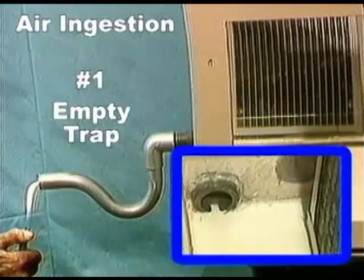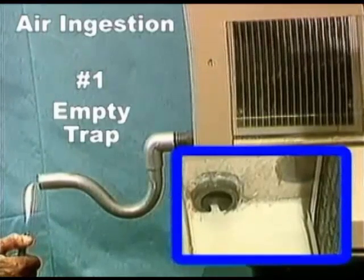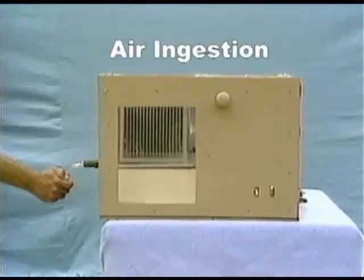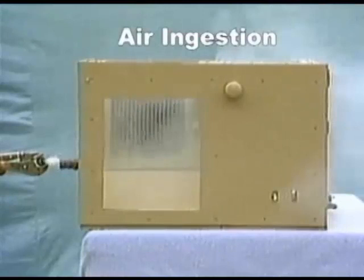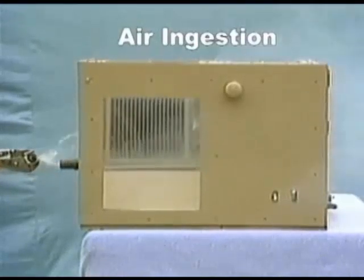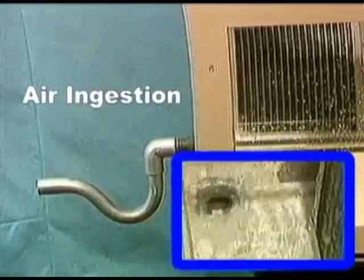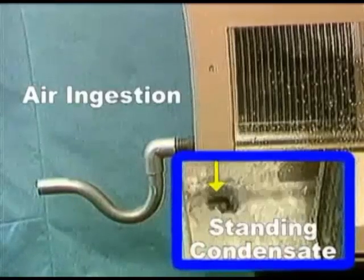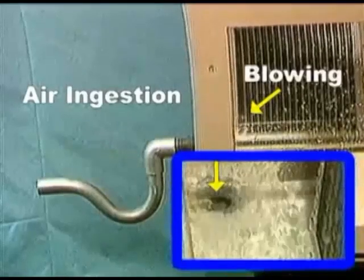During startup for summer cooling and during winter operation, the empty trap has no seal and acts like a missing trap, allowing air ingestion. If present, toxic or noxious air near the drain outlet will be spread into the building. This ingestion of air also causes condensate to stand in the pan and leads to condensate blowing inside the air conditioner.